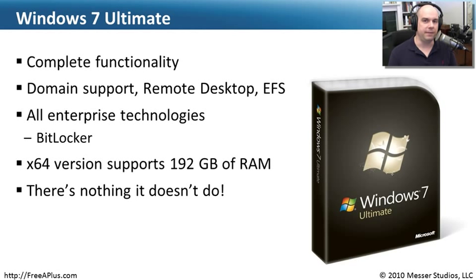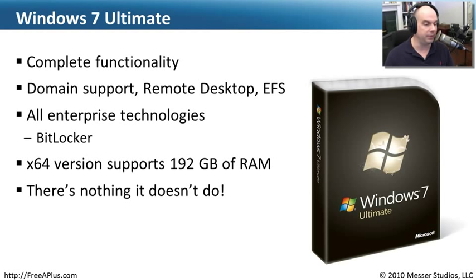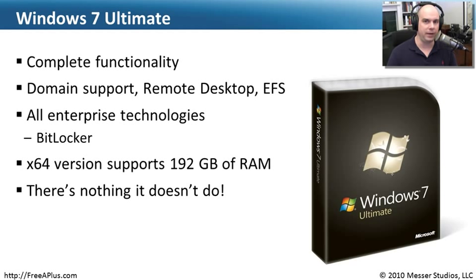Windows 7 Ultimate is the edition that does everything. It includes every single capability: domain connectivity, remote desktop hosting, encrypting file system, BitLocker, and all other enterprise technologies. The 64-bit version also supports 192 gigabytes of memory, the same as Windows 7 Professional. Windows 7 Ultimate would give you all the things you would ever need, and there are also times you might want to upgrade to enhance your capabilities to reach this edition.